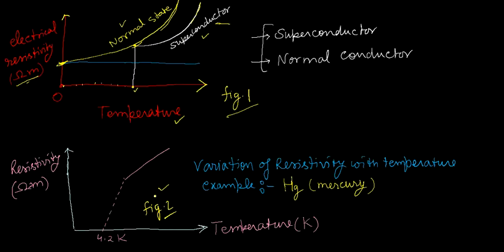In figure number two, you can see that 4.2 Kelvin is the critical temperature for Mercury. Mercury is considered here as an example. On the x-axis is temperature and on the y-axis is resistivity. When you decrease the temperature, the resistivity decreases, and at a certain point it suddenly becomes zero. That point where the resistivity becomes zero is the critical temperature — 4.2 Kelvin for Mercury.